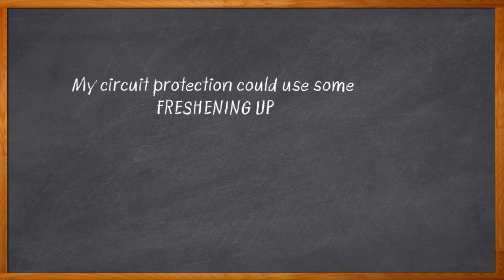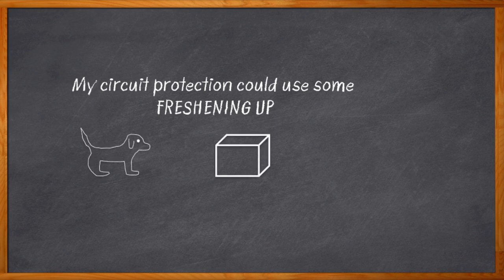Ever feel like our circuit protection technology is a little out of date? We can make smart cameras that can tell me if it's a dog or a package on my front porch. We can put a semiconductor on a piece of silicon the size of a dime. But when it comes to circuit protection, we have fuses where we wait for the current to melt a chunk of metal inside a tube.